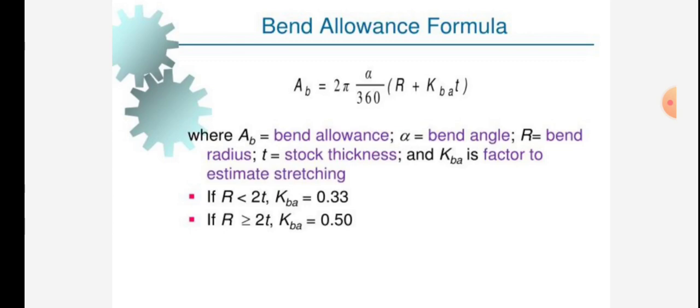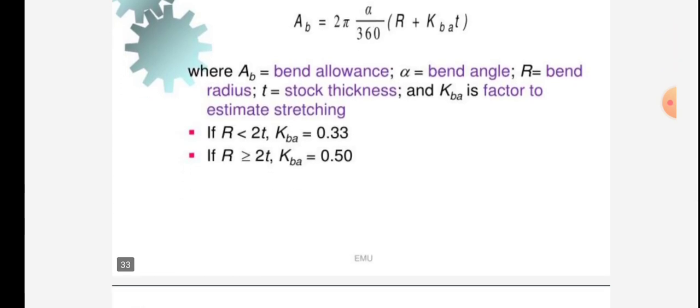And Kba is a factor to estimate stretching. If R ≥ 2t, Kba = 0.33. If R < 2t, Kba = 0.50.